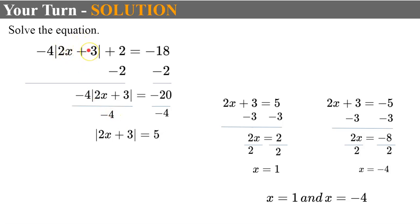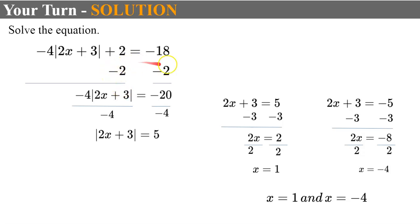Let's check: 2 times 1 is 2, plus 3 is 5; absolute value of 5 is 5; 5 times negative 4 is negative 20; negative 20 plus 2 is negative 18. For negative 4: 2 times negative 4 is negative 8; negative 8 plus 3 is negative 5; absolute value of negative 5 is 5; 5 times negative 4 is negative 20; plus 2 is negative 18. Note that the entire expression equals negative 18, but it's not the isolated absolute value that's negative — once isolated, it equals positive 5. Don't jump to no solution just because the equation contains a negative; only declare no solution when the isolated absolute value expression equals a negative value.